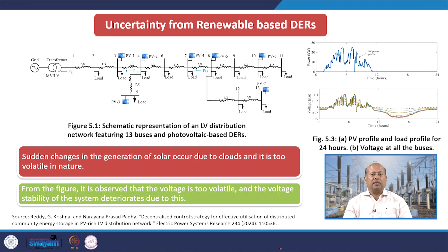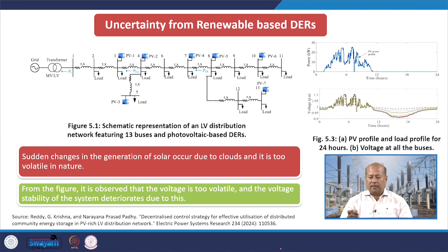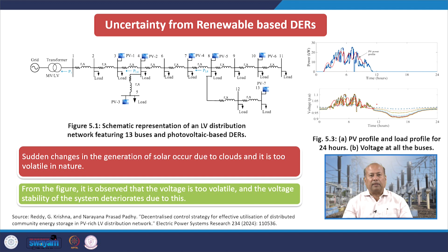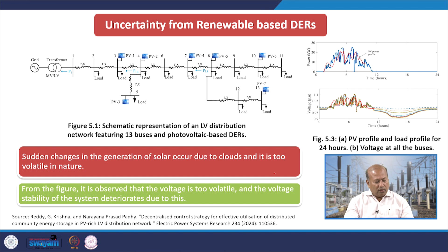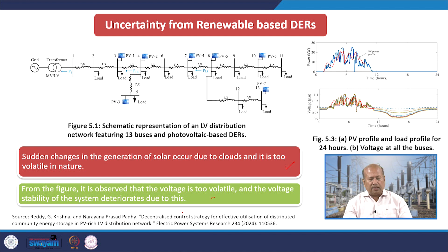Similarly, regarding uncertainty from renewable based DERs: we have connected PV but the generation is going to be oscillating or uncertain. Sudden changes in solar generation occur due to clouds and it is too volatile in nature. From the figures it is observed that the voltage is too volatile and the voltage stability of the system deteriorates due to this.